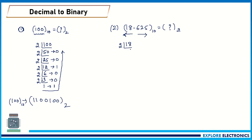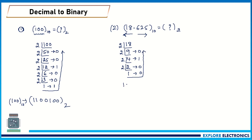For the integer part 18, we use the same division method. 18 ÷ 2 = 9, remainder 0. 9 ÷ 2 = 4, remainder 1. 4 ÷ 2 = 2, remainder 0. 2 ÷ 2 = 1, remainder 0. Reading the remainders from bottom to top gives us 10010, which is the binary for 18.